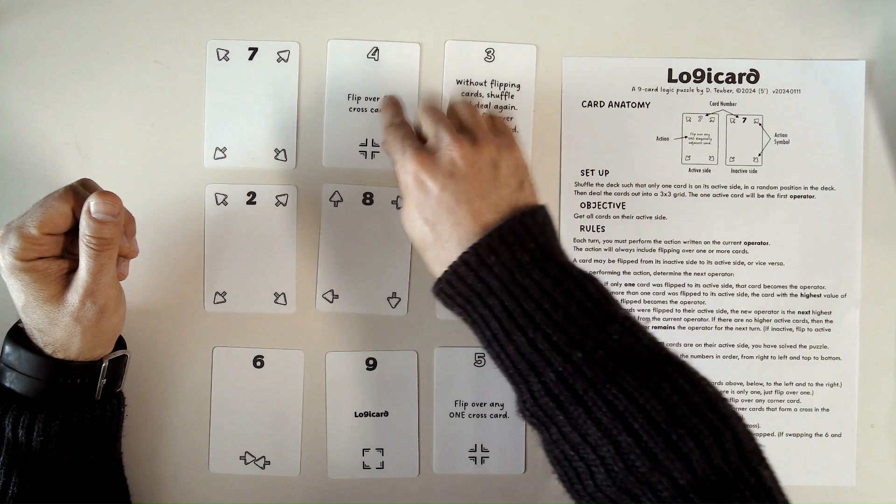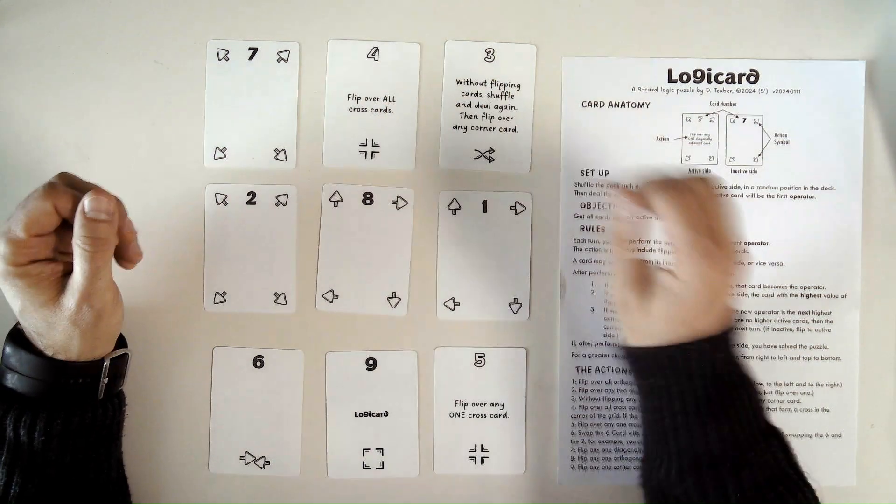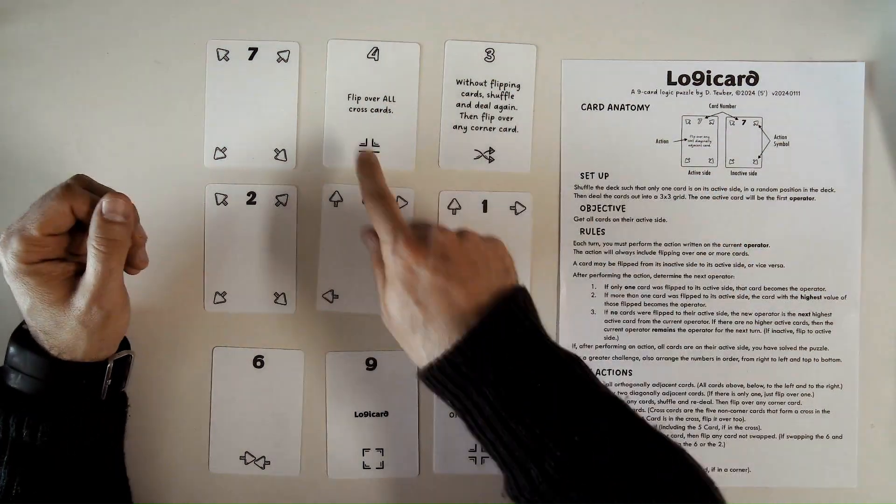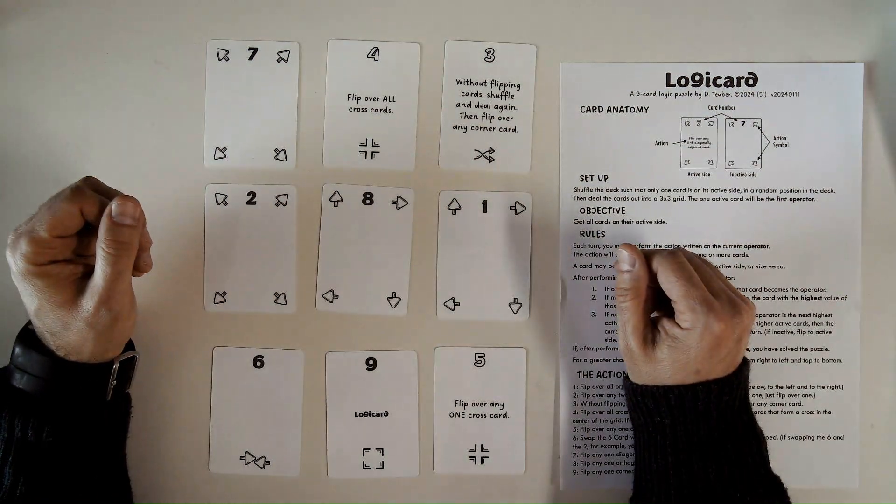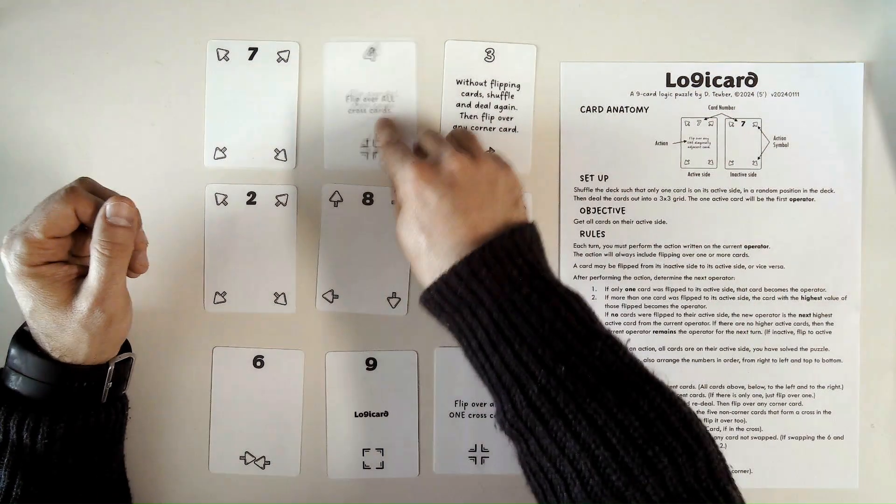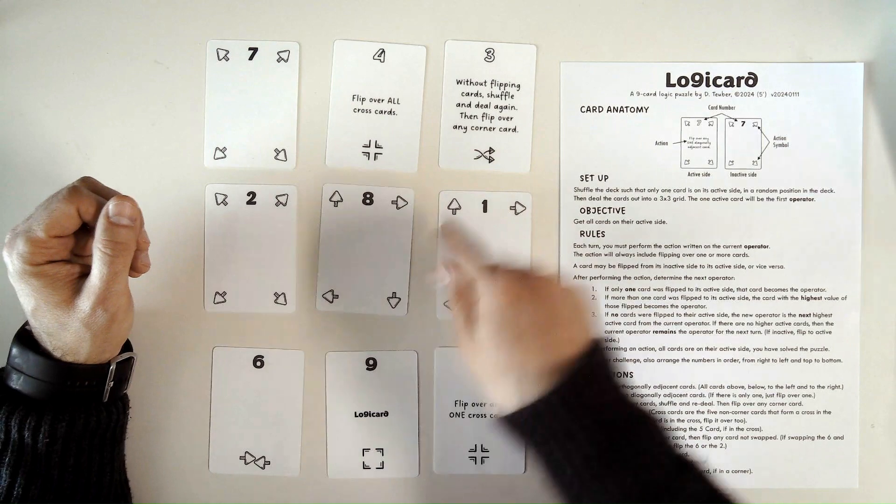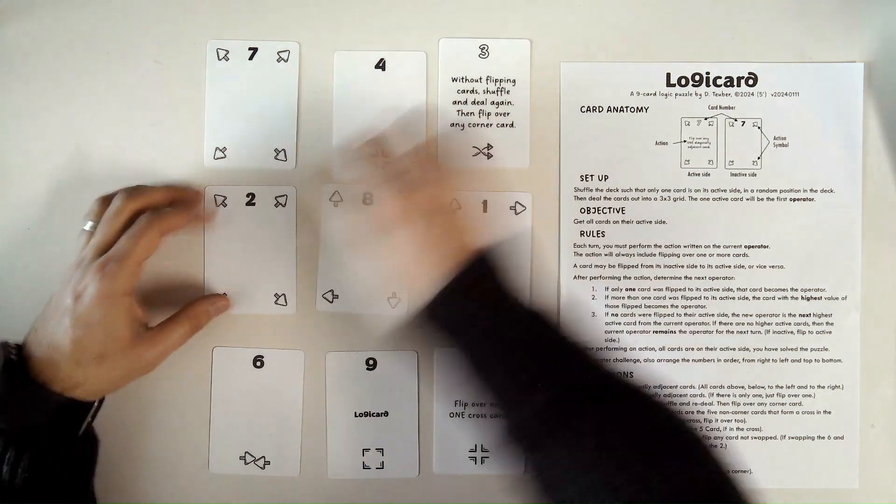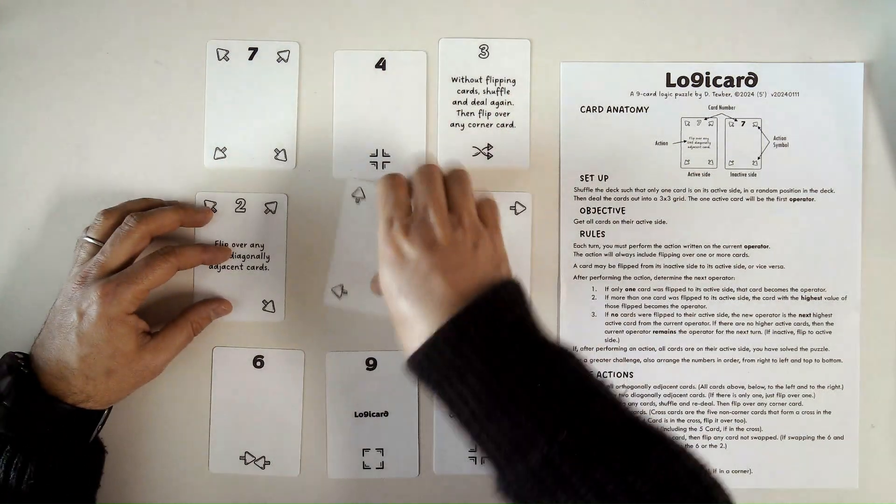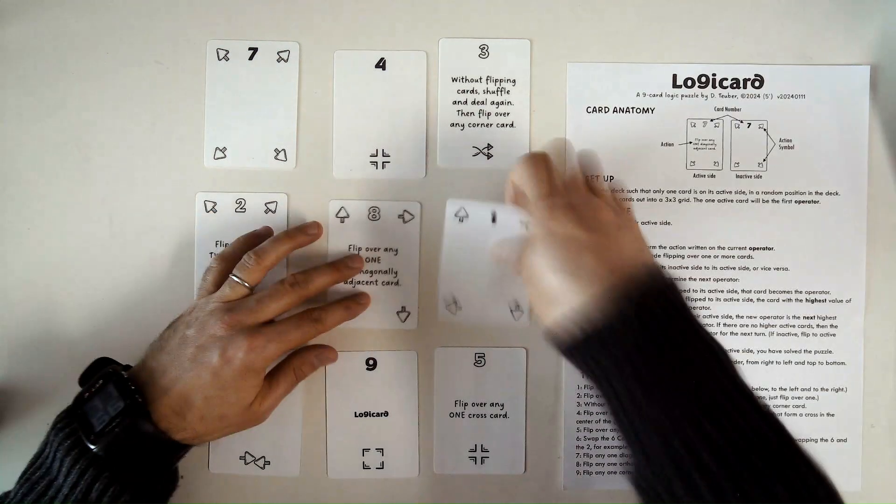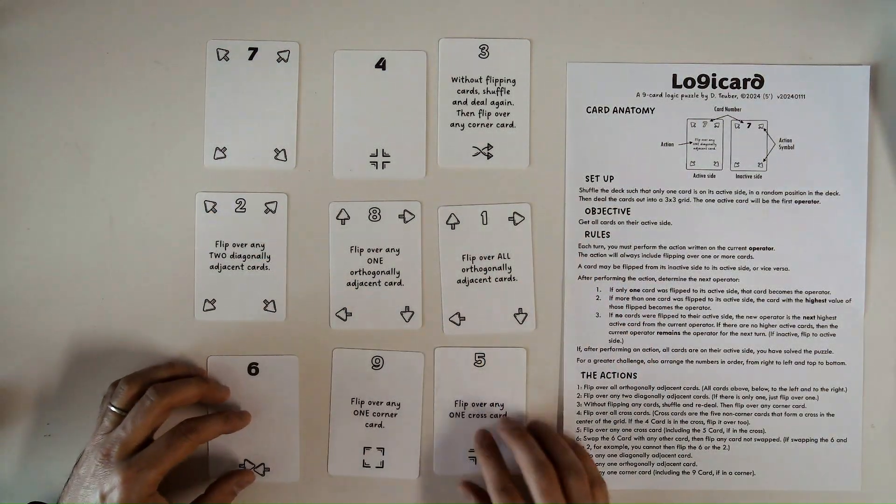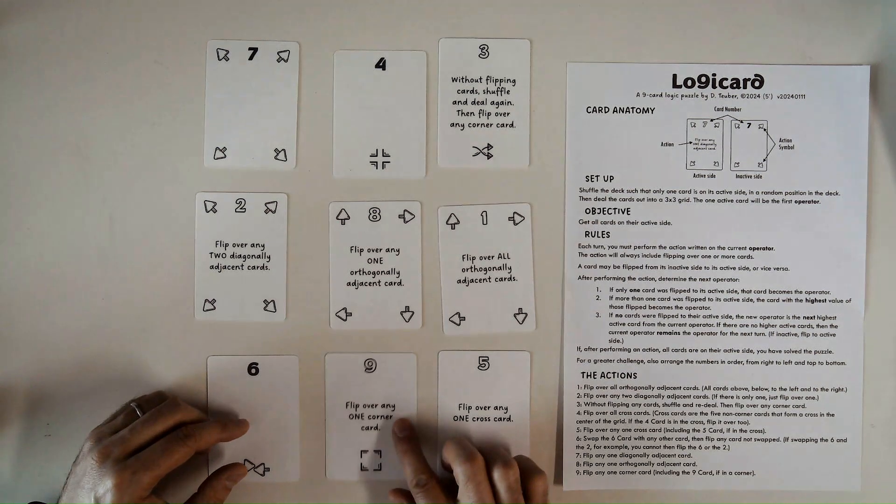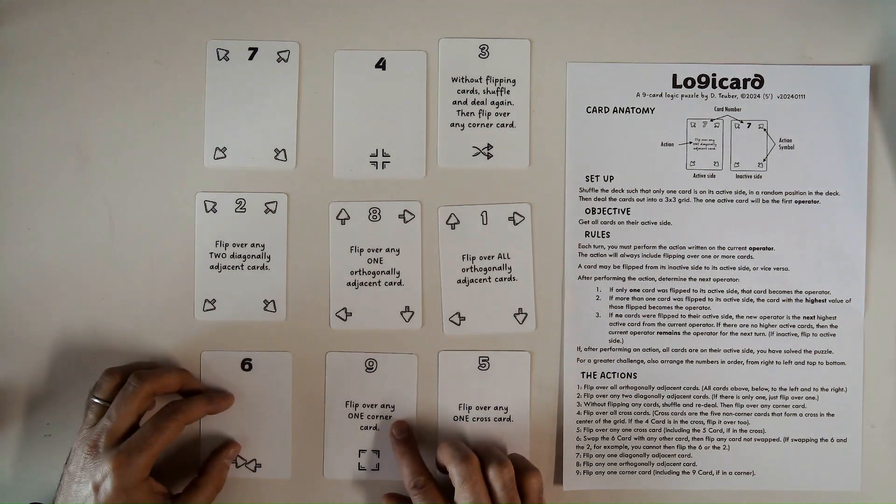I flipped it to its active side. That means it's now the operator. And this one says flip over all cross cards. And that includes this 4 because the 4 is in the cross. So I'll flip over all 5 of those. Of those cards, the highest one is the 9. So the 9 becomes the new operator.